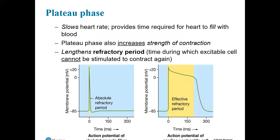The plateau phase does three things for the heart muscle. First, it slows down the heart rate by providing enough time for each chamber to go through its filling phase. Second, it helps the heart muscle contract with greater force by pausing the contraction phase briefly. Third, it lengthens the refractory period — the time during which the cardiac muscle cell cannot be stimulated to contract again — keeping the heart contracting on time and in synchronization.